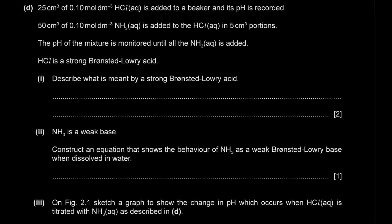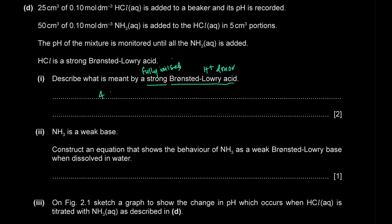25 cm³ of 0.1 mol/dm³ HCl is placed in a beaker, then 50 cm³ of 0.1 mol/dm³ aqueous ammonia is added in 5 cm³ portions and the pH is monitored. HCl is a strong Brønsted–Lowry acid, meaning it is a proton donor that fully dissociates or fully ionizes in solution.